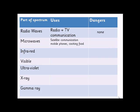Microwaves have one main danger: heating. Just as a microwave oven heats up water in food, microwaves do the same thing to cells in the body. This is why there is quite a bit of ongoing research into the effects of microwaves from mobile phones on humans.